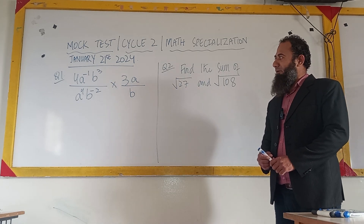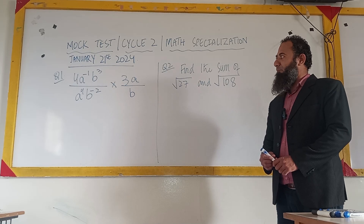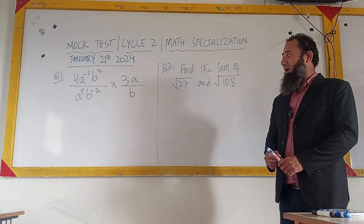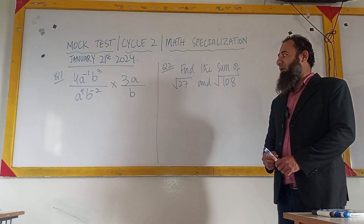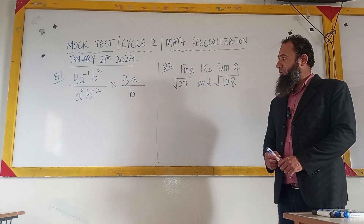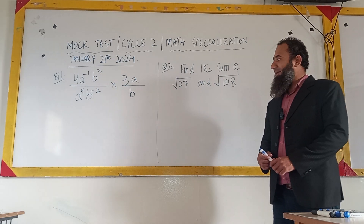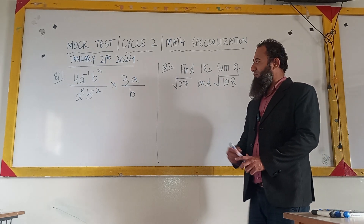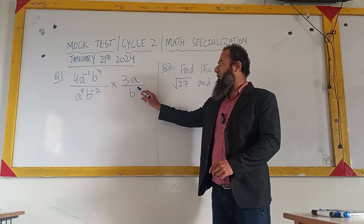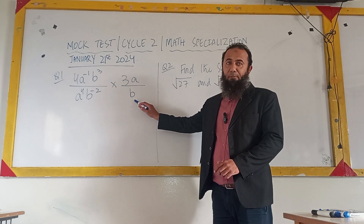My first question: we want to simplify 4a raised to the power minus 1, b power 3, divided by a power 4 times b power minus 2, and this fraction is multiplied by 3a upon b.